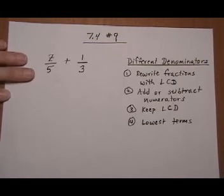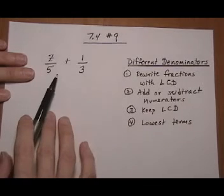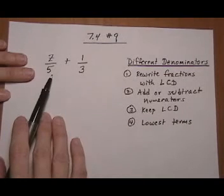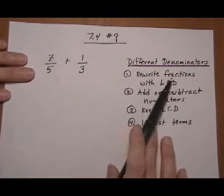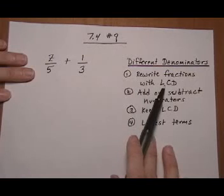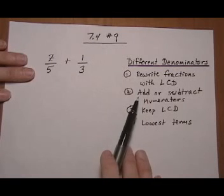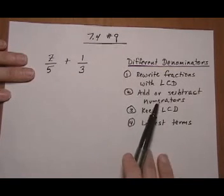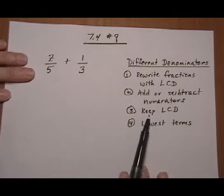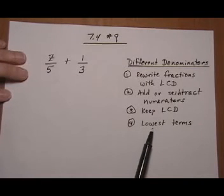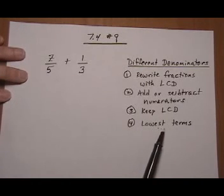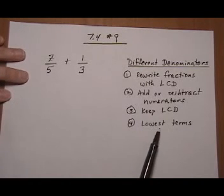So with different denominators, just like with arithmetics where we have no variables, we first have to find a common denominator if we're adding or subtracting. That's going to be our first step. Rewrite the fractions using the common denominator, and then after that we go right to the same steps we did in the previous video clip. We add or subtract the numerators, keep the common denominator, and put the final answer in lowest terms. Lowest terms, again, can mean factor and cancel.